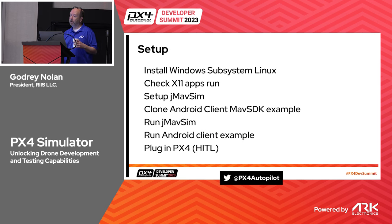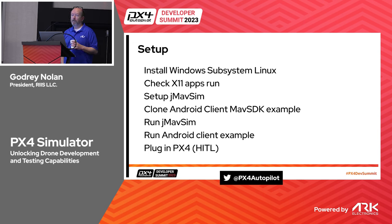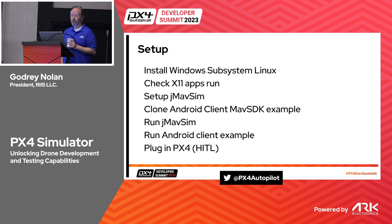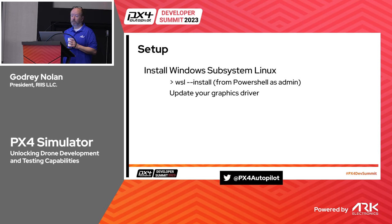So what do we do to get there for my poor intern who couldn't seem to figure it out? First thing we want to do - all that we're running with Ubuntu is we're running X11. X11 stands for X Windows, which is what it used to be called. This thing has been around since the 90s. Essentially what you want to do is install the Windows Subsystem for Linux, make sure that you can run X11 apps - just check to see if we can run xclock - then set up jmavsim, clone the Mav SDK example, and I'll show you how to change that so you can point it at PX4. Run jmavsim, run the Android client, and if you're going to do HITL, you can plug in the PX4 too.